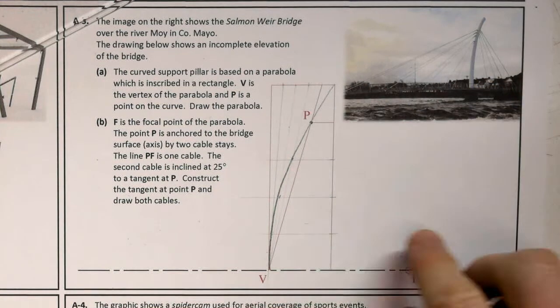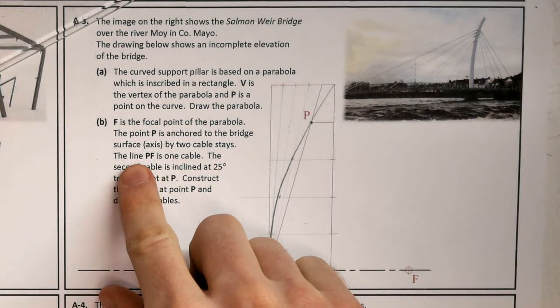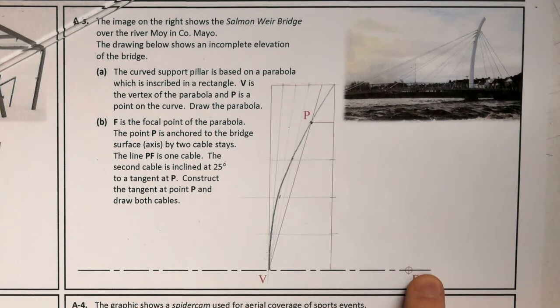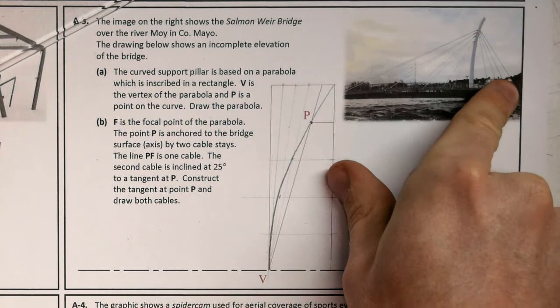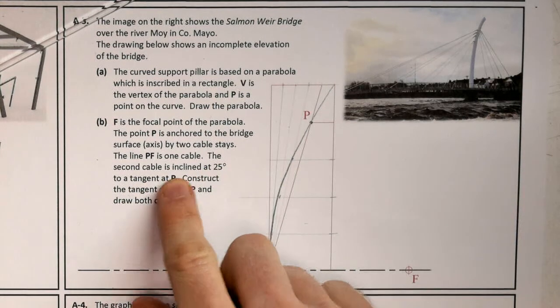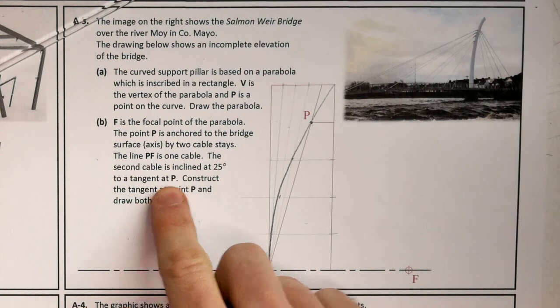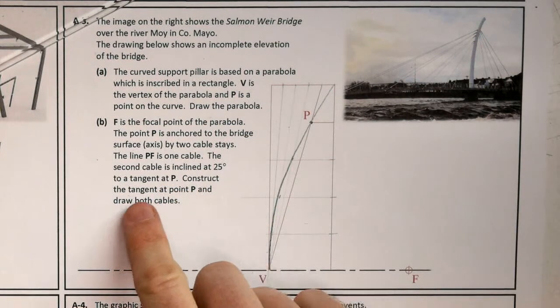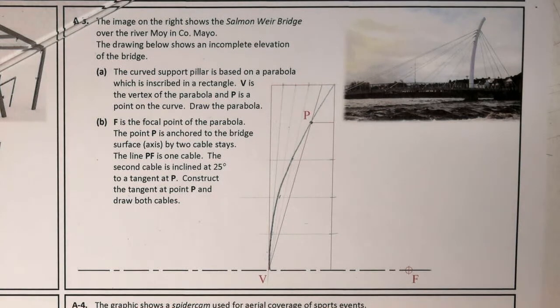It's going to be anchored down here by two cables. The line PF is one cable. So P to F is going to be one of the cables, similar to one of these. The second cable is inclined at 25 degrees to a tangent at P. So we need to find a tangent and then measure 25 degrees from that tangent at P and draw both cables.